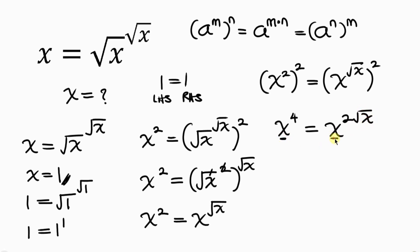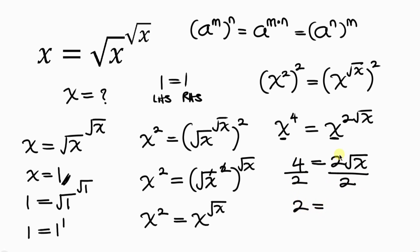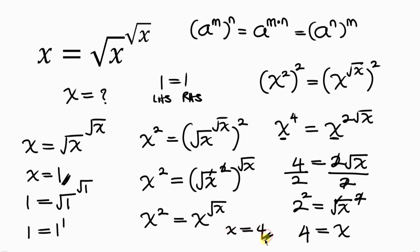The bases on both sides are equal, so we can equate the powers: 4 equals 2√x. Dividing both sides by 2 gives 2 equals the square root of x. Squaring both sides, 2 squared is 4 and the square cancels the square root, leaving x equals 4 as another solution.